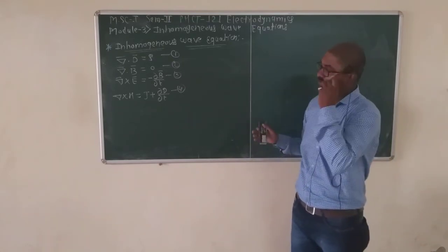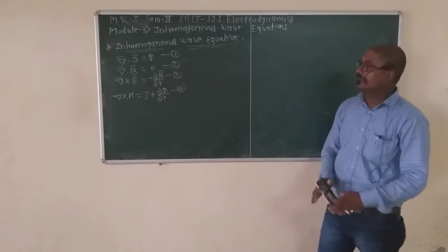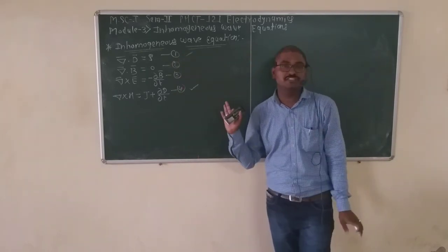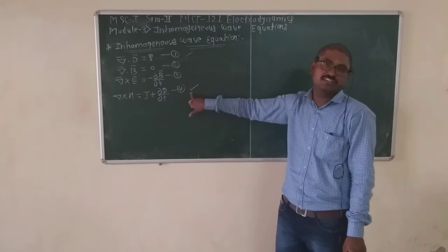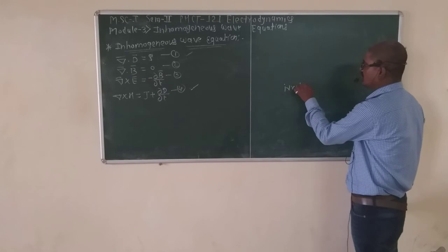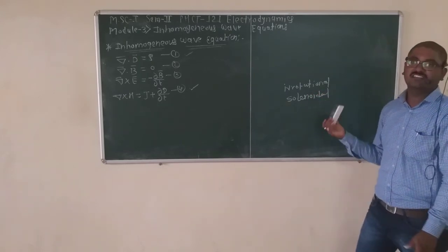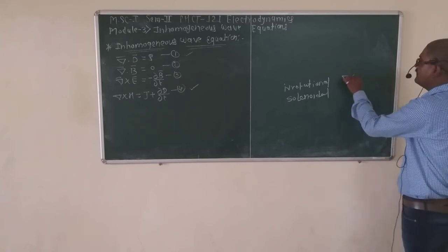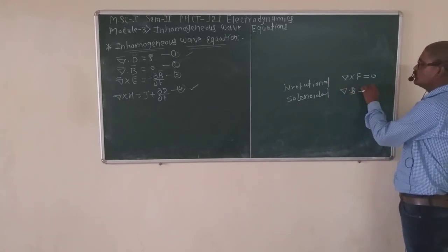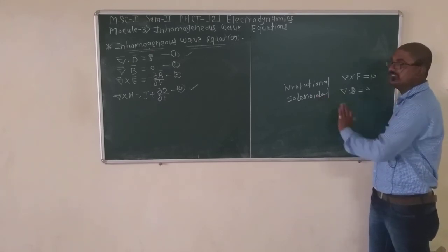We will obtain the two inhomogeneous wave equations in terms of magnetic vector potential A and scalar potential phi. Equations 1 and 4 are the inhomogeneous equations, while equations 2 and 3 have solenoidal character. An irrotational vector has a cross product equal to zero, while a solenoidal vector has a dot product equal to zero.